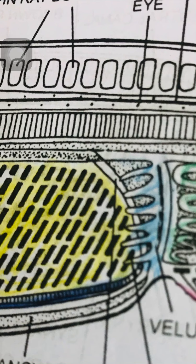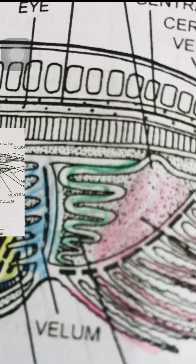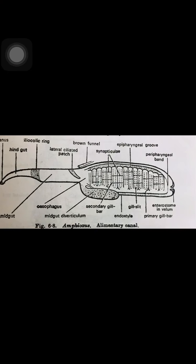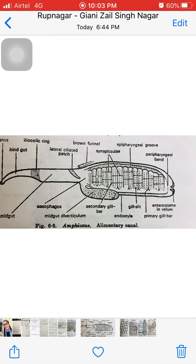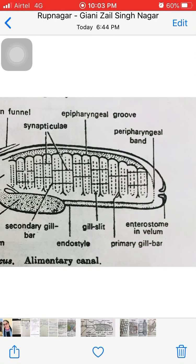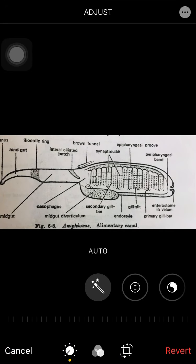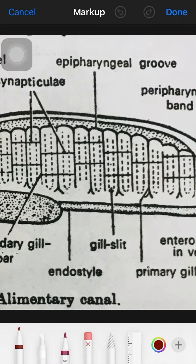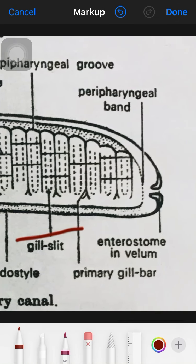These gill slits are separated by vertical bars that are called gill bars. This figure is showing you different types, so this is very easy to understand.